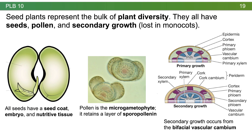Pollen is the micro gametophyte — it's important not to confuse pollen with spores. Pollen is the product of mitotic division of the microspore, and because spores have sporopollenin, pollen also has sporopollenin, which keeps it tough and resistant to desiccation. Secondary growth — growth in width — occurs from a bifacial vascular cambium, which requires ordered vascular bundles. Monocots have scattered vascular bundles, so while all seed plants ancestrally have secondary growth, it is lost in monocots.